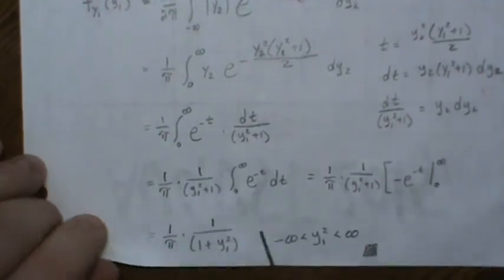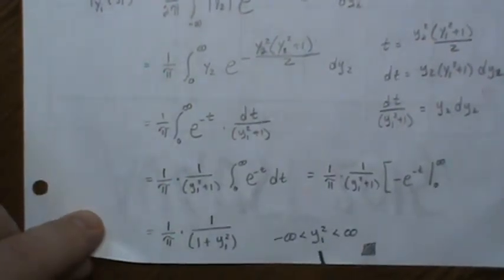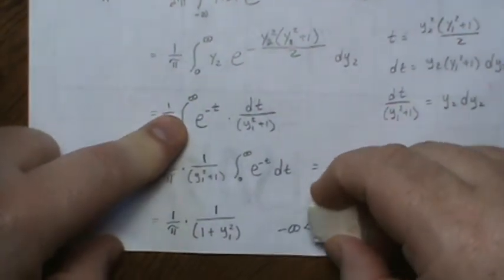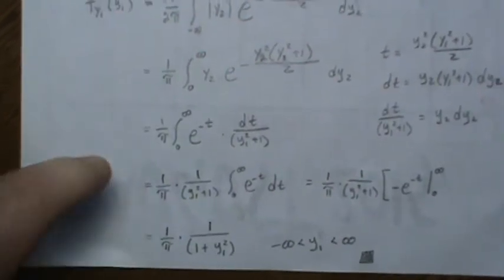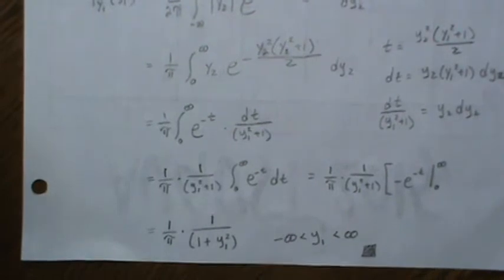So it's one times this, and then you get this distribution here. So Y1 ranges from negative infinity to infinity, and this is a Cauchy distribution. So the ratio of standard normal distributions is Cauchy.